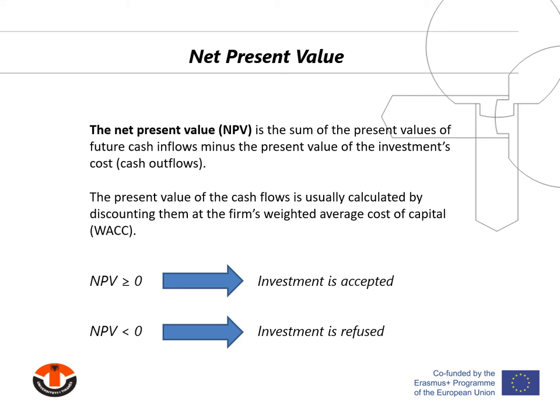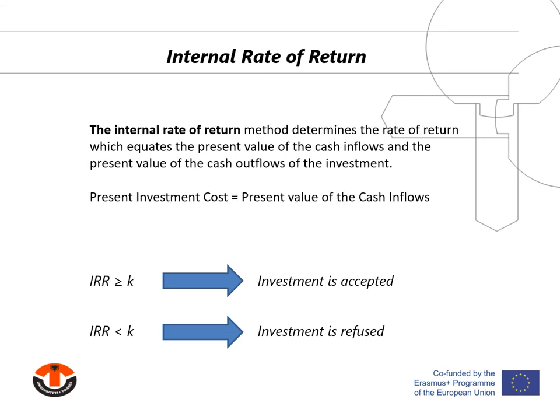If the net present value is positive or zero, the investment is accepted; if negative, it is rejected. The internal rate of return method determines the rate of return that equates the present value of cash inflows with the present value of the investment cost — a rate unique to the investment. In effect, the IRR satisfies the equation: investment cost equals present value of cash inflows. The investment is accepted if the IRR exceeds or equals the firm's cost of capital; if the IRR is smaller than the cost of capital, the investment is rejected.